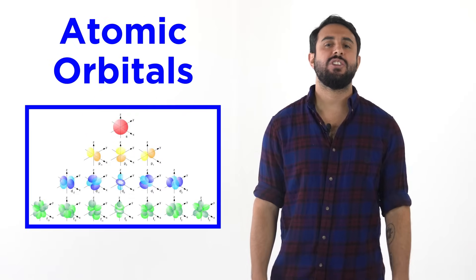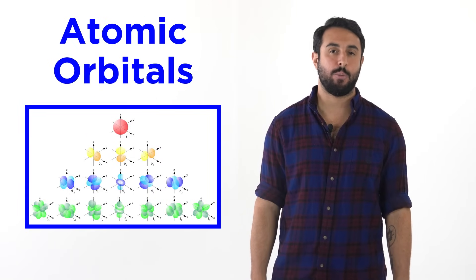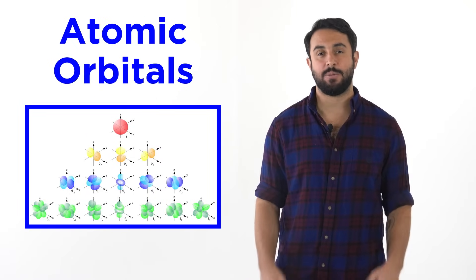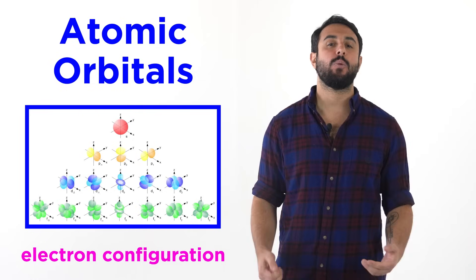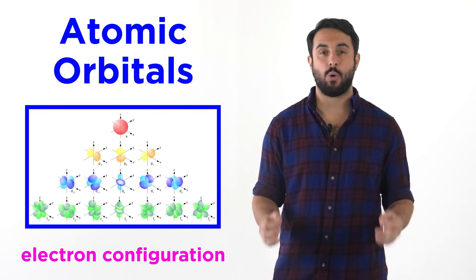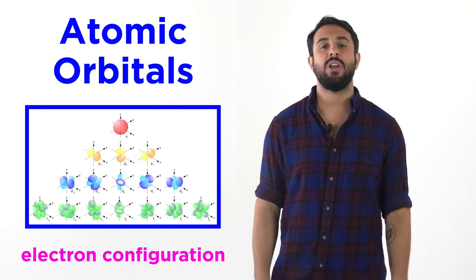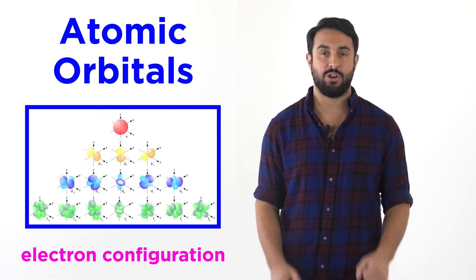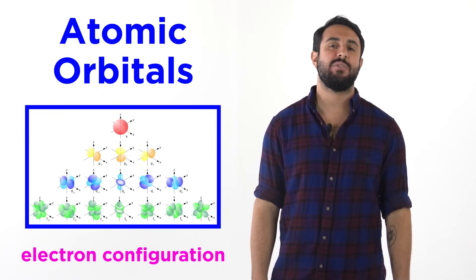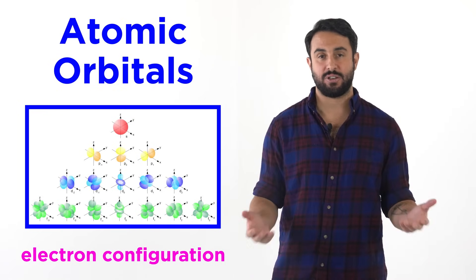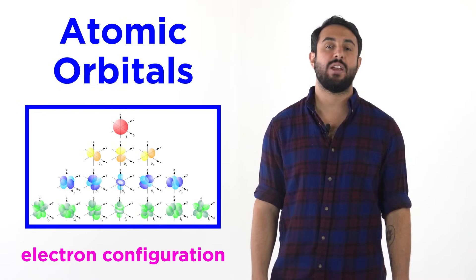Professor Dave and Chegg here. We just learned about the types of atomic orbitals that the electrons in an atom can inhabit. The specific arrangement of electrons amongst the orbitals within an atom is called the electron configuration of the atom. Many properties of an element will depend on its electron configuration, so let's make sure we understand these now.